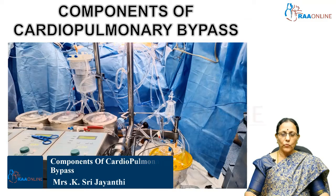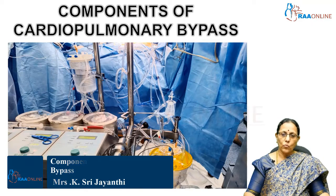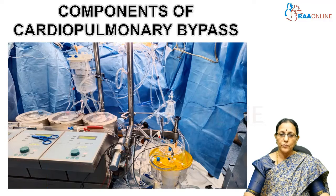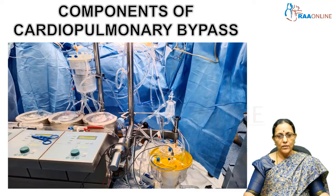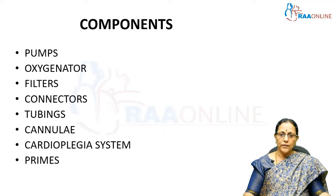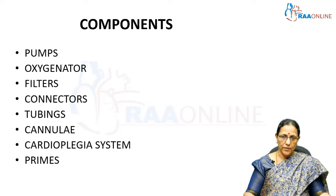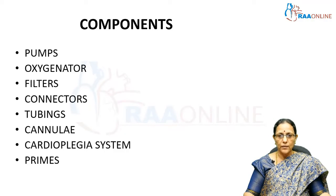Good evening everybody. In the previous chapter we had seen what was cardiopulmonary bypass. Since we have an idea of cardiopulmonary bypass, we should now go into the components of the cardiopulmonary bypass — what are the actual gadgets that are used, what are the actual disposables that are used. Coming to the components, mainly we have the pumps or the heart-lung machine. In addition, we have disposable components like the oxygenators, filters, connectors, and tubings which connect the patient to the heart-lung machine.